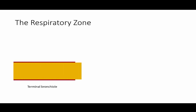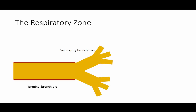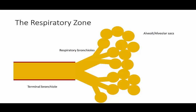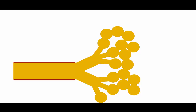Bronchioles further divide until they form terminal bronchioles, the smallest diameter airways which contain smooth muscle in their airway walls. These terminal bronchioles divide into respiratory bronchioles, which then divide until finally forming the alveoli and alveolar sacs. The distribution of alveoli is not uniform over the entirety of the lung. Approximately 50% of the lung's alveoli are located in the outer 30% of the lung radius, which is why on chest x-ray, the peripheral portion of the lung appears relatively empty.